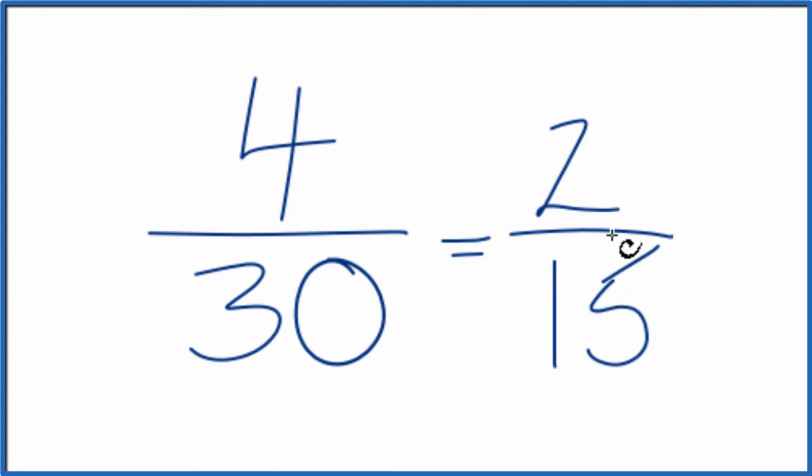If you were to divide 4 by 30 and 2 by 15, you would get the same answer. That's because they're equivalent fractions. They have the same value. It's just that we've simplified 4 over 30 down to 2 over 15.